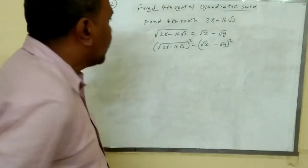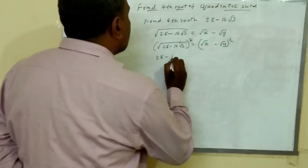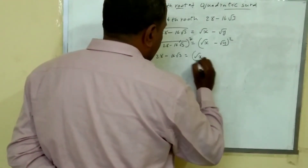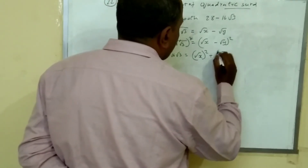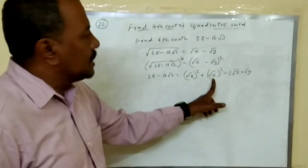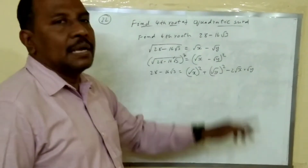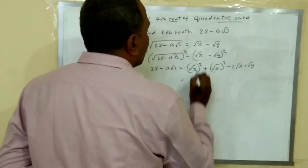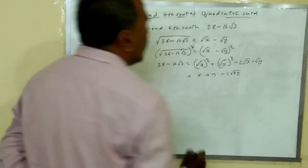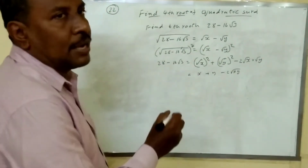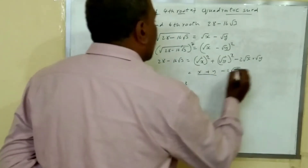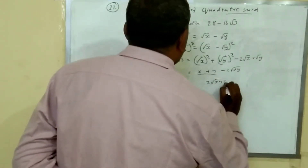Squaring on both sides — the square root cancels, so 28 minus 16 root 3 is equal to the expanded form, which is root x squared plus root y squared minus 2 times root x times root y. Using the identity (A minus B) squared equals A squared plus B squared minus 2AB, this simplifies to x plus y minus 2 root xy. Comparing corresponding terms: x plus y equals 28, and in place of 2 root xy, 16 root 3 is there.